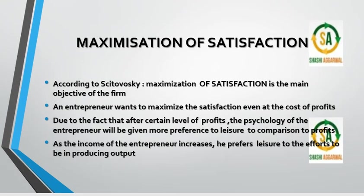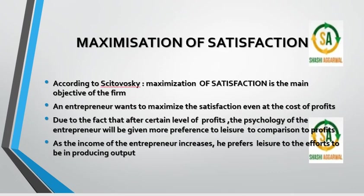Now we look at the maximization of satisfaction. According to Cyert, the entrepreneur's main objective, rather than profit maximization, is maximization of satisfaction. He wants to maximize his own satisfaction, even at the cost of profit — he does not want much profit. As his income increases, the entrepreneur prefers leisure over effort and chooses to do less work.